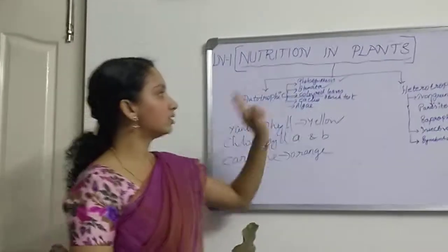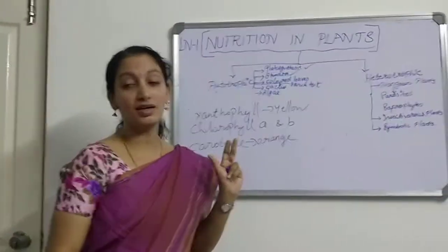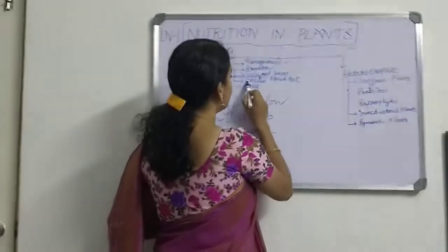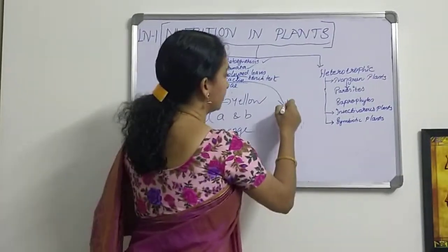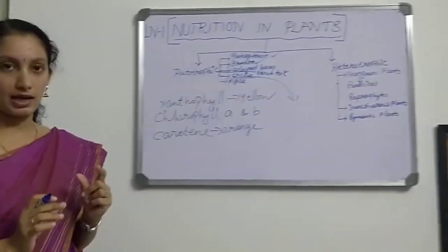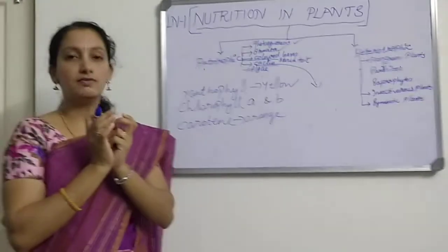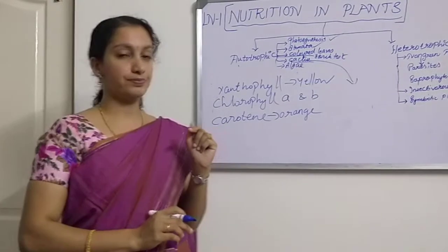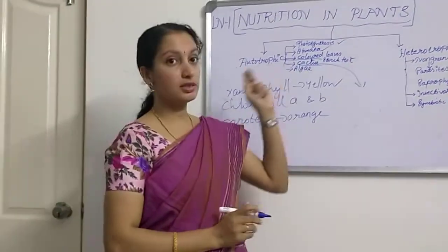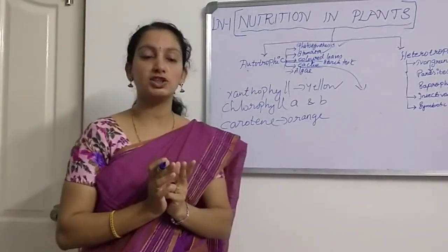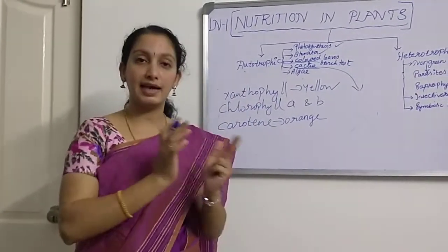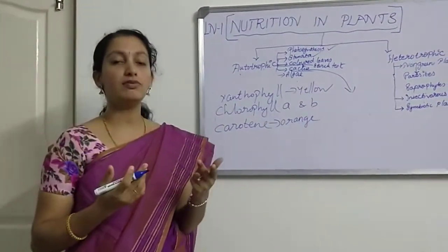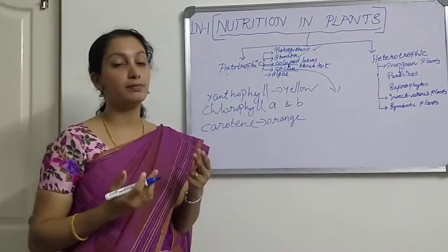This is about different colored leaves. Next is cactus. Cactus is a type of plant usually seen in deserts. It has a modified structure adapted to the conditions where it lives, to survive in the absence of much water.